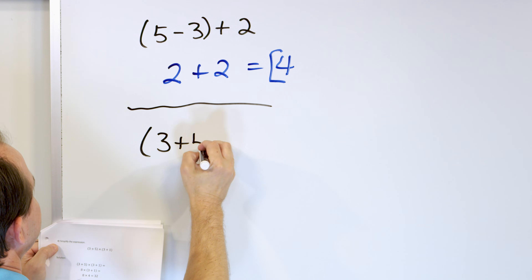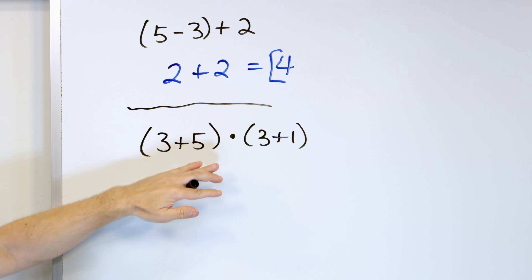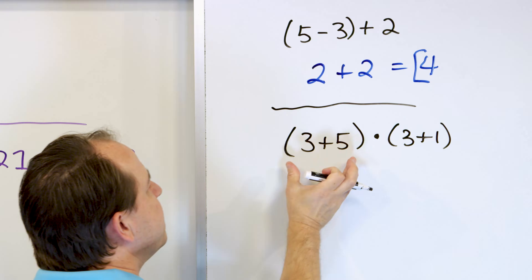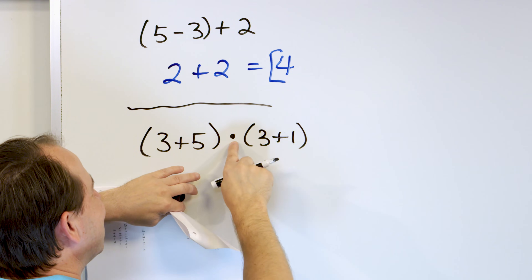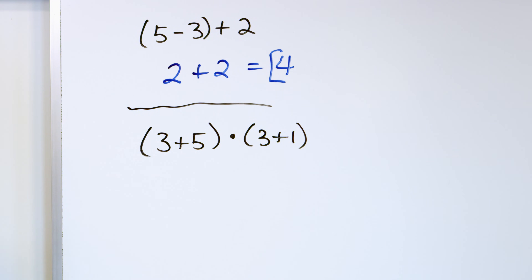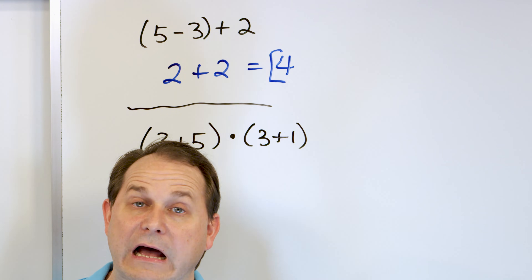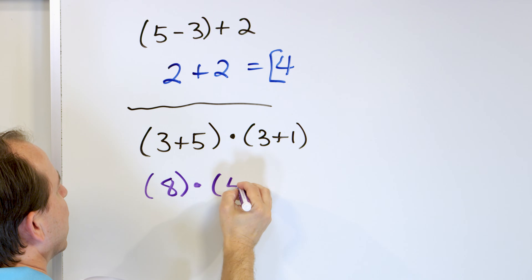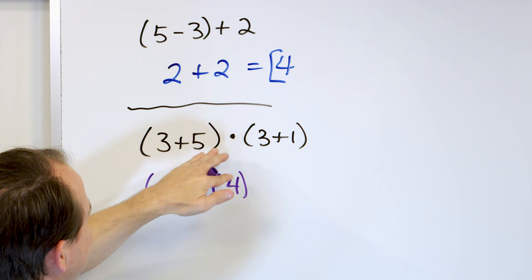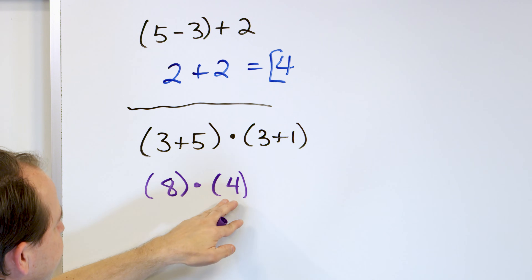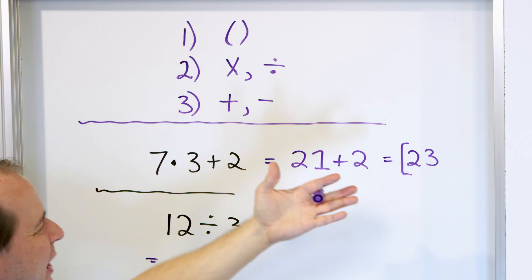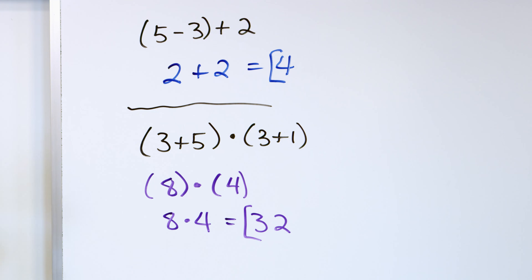Let's take a look at (3 plus 5) multiplied by (3 plus 1). This looks a bit different — we have not one set of parentheses but two. We must do parentheses first, so we do both: 3 plus 5 is 8, and 3 plus 1 is 4. We can do them at the same time. Now we're done with parentheses. We can drop them: 8 times 4. That's the only thing left, which is multiplication — 8 times 4 is 32. So the answer is 32. If you do this in any other order, you will not get the same answer.